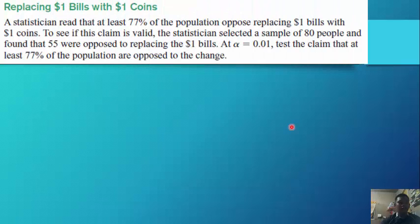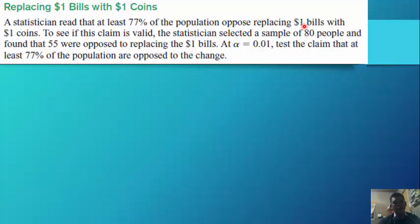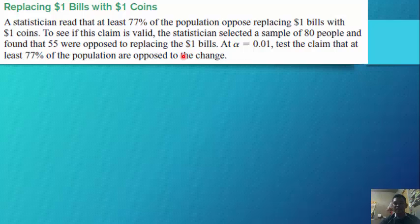Example — replacing one dollar bills with one dollar coins. A statistician read that at least 77 percent of the population opposed replacing one dollar bills with one dollar coins. To verify this claim, a sample of 80 people was selected and 55 were found to be opposed. At an alpha of 0.01, test the claim that at least 77 percent of the population are opposed.